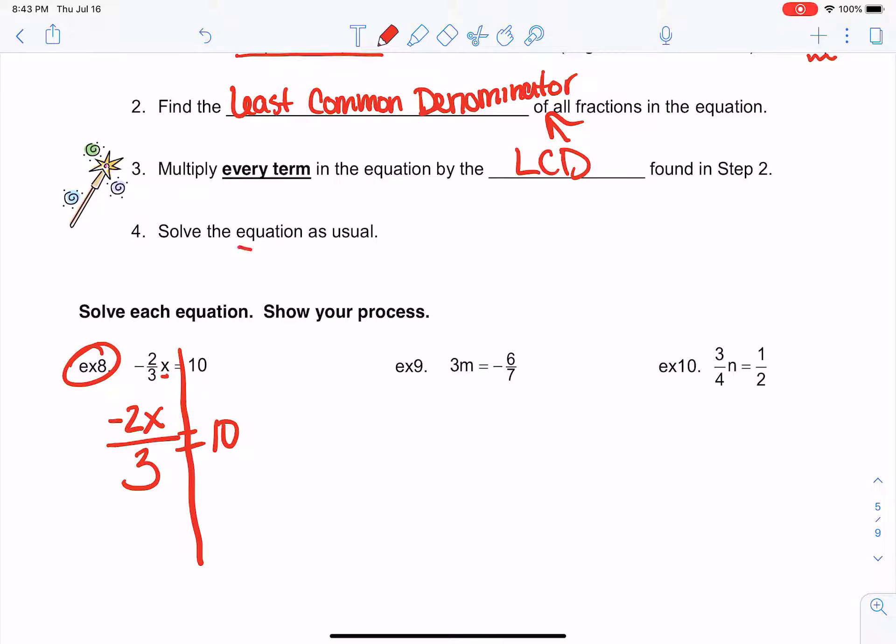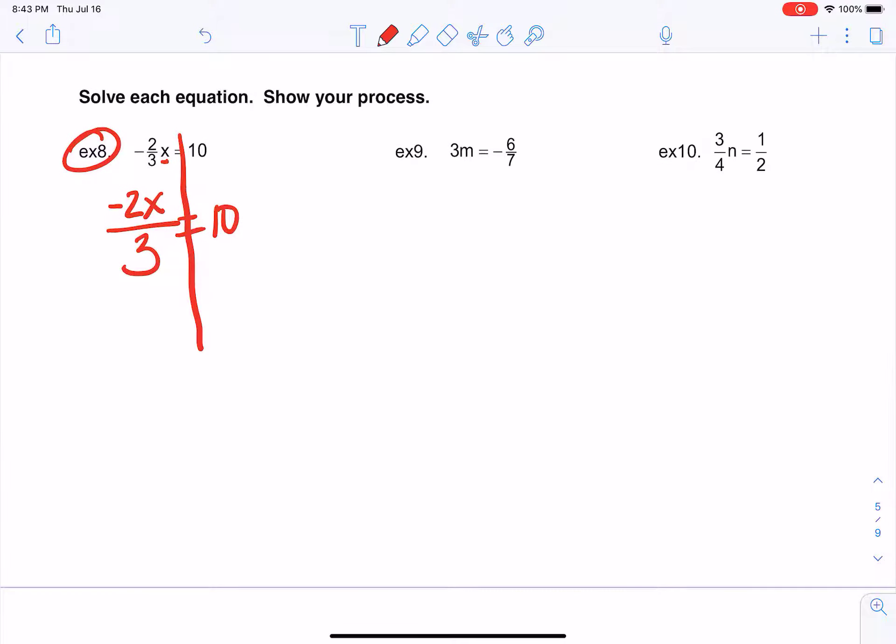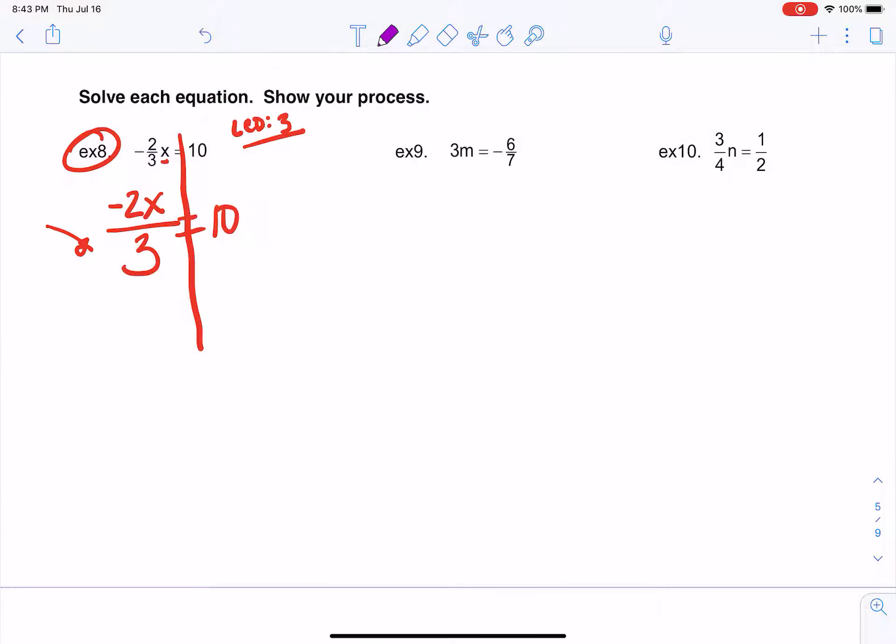And then we're going to solve the equation just like we did yesterday. So this LCD really only happens if I have more than one fraction, which I don't in this problem. So my LCD is just whatever is on the bottom, which is 3. So now what I need to do is I'm going to multiply everything by that bottom number of the fraction. So I'm going to multiply this whole term by 3, and then I'm going to multiply the other side by 3. So those go away.